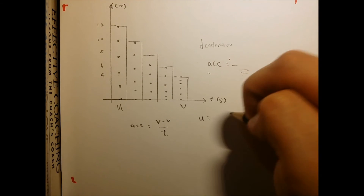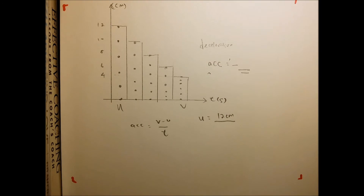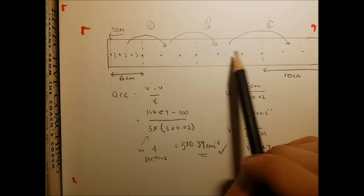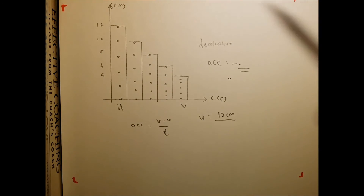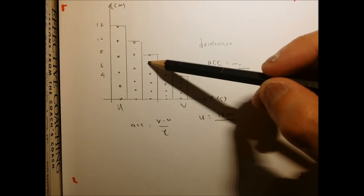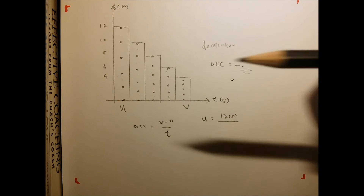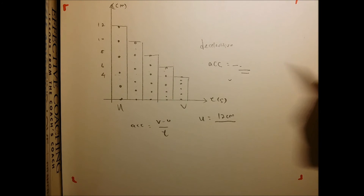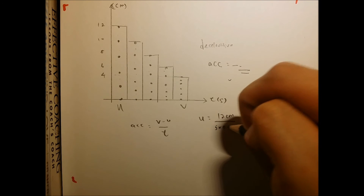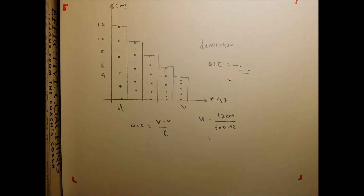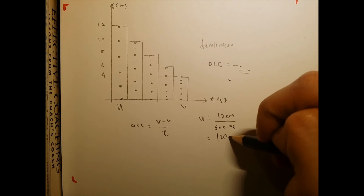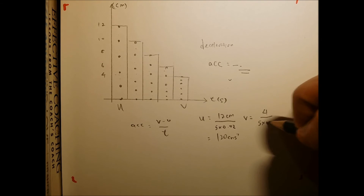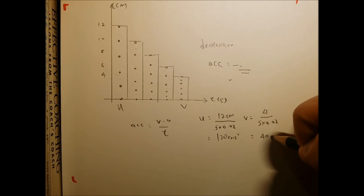The initial velocity is 12 cm. Each section has 5 intervals, so it's 5 times 0.02, giving 120 cm per second. The final velocity is 4 cm divided by 5 times 0.02, which gives 40 cm per second. A very common mistake is taking the bigger value minus the smaller — always remember to take final minus initial, so it's 40 minus 120 divided by the time.